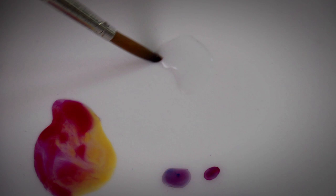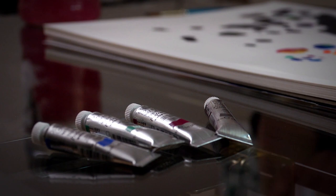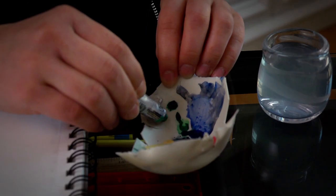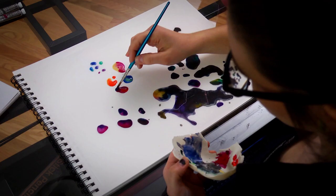I pick up usually a fairly large mop brush, lay down a pool of water in whatever organic shape seems appropriate, and then as soon as that pool is laid down on top of the paper, I will dip my watercolor brush, a smaller brush usually, straight into whatever pigment I have on my palette.